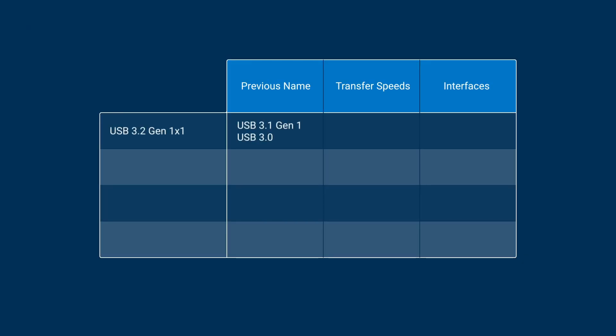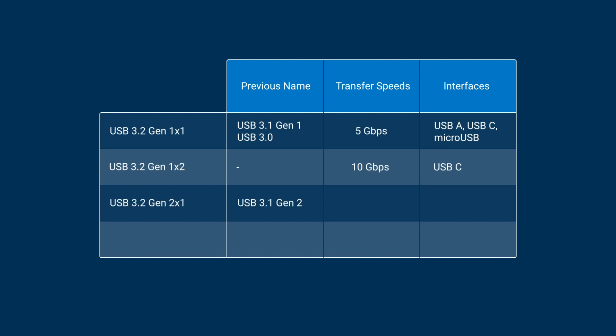And this is where a visual table really starts to come in handy. USB 3.2 Gen 1 x 1 has the same transfer speeds as USB 3.1 Gen 1: 5 Gbps. USB 3.2 Gen 1 x 1 can utilize the USB-A, USB-C, and micro-USB interfaces. The newly added x1 indication here represents the number of data lanes available. USB 3.2 Gen 1 x 2 bumps the potential transfer speed up to 10 Gbps thanks to an additional data lane, but as such is only available in USB-C form factor. USB 3.2 Gen 2 x 1 allows for those 10 Gbps transfer speeds in the USB-A, USB-C, and micro-USB form factors.